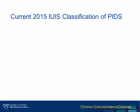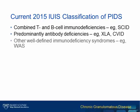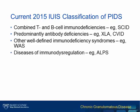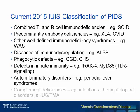This slide provides the most recent classification of primary immunodeficiencies, which includes CGD or Chronic Granulomatous Disease, based on the International Union of Immunological Societies (IUIS) classification schema. CGD is grouped under the phagocytic defects due to its association with neutrophil dysfunction.